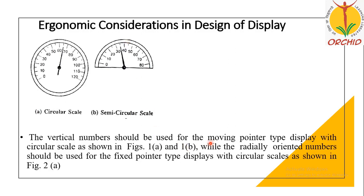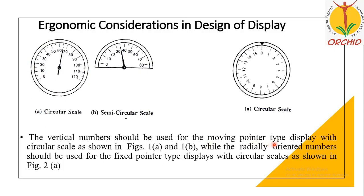Vertical numbers should be used for a moving pointer type display with a circular scale. When the pointer is moving and scale is fixed, the numbers should be vertical. When the pointer is fixed and scale is moving, the numbers should be radially oriented so that whenever they come in front of the pointer, they will be properly aligned with the reading point.